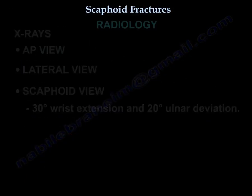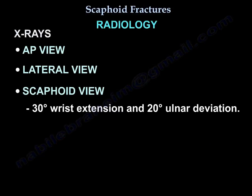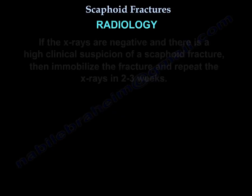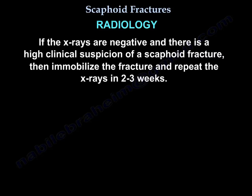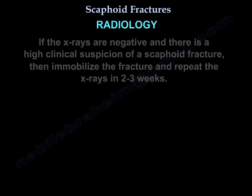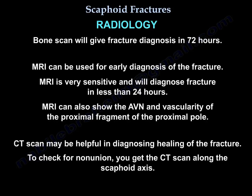Radiology: X-rays — AP, lateral, and scaphoid view. The scaphoid view requires 30-degree wrist extension and 20-degree ulnar deviation. If x-rays are negative but there is high clinical suspicion, immobilize the fracture and repeat x-rays in 2–3 weeks. A bone scan will give a fracture diagnosis within 72 hours. MRI can be used for early diagnosis — it is very sensitive and will diagnose the fracture in less than 24 hours. MRI also shows AVN and vascularity of the proximal pole. CT scan may be helpful in diagnosing healing of the fracture and checking for nonunion along the scaphoid axis.